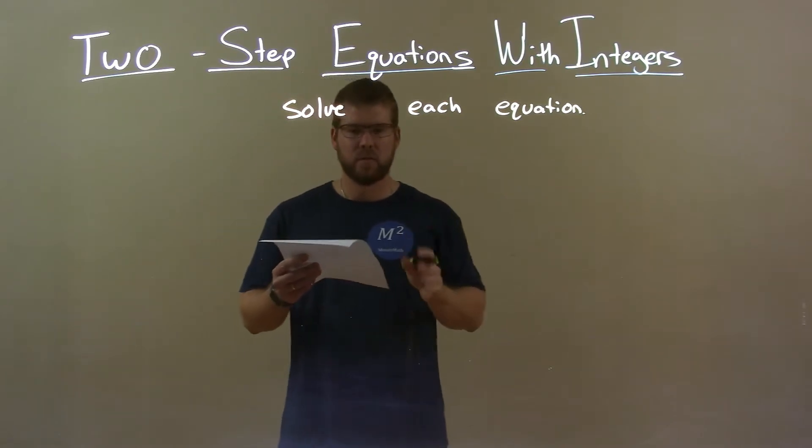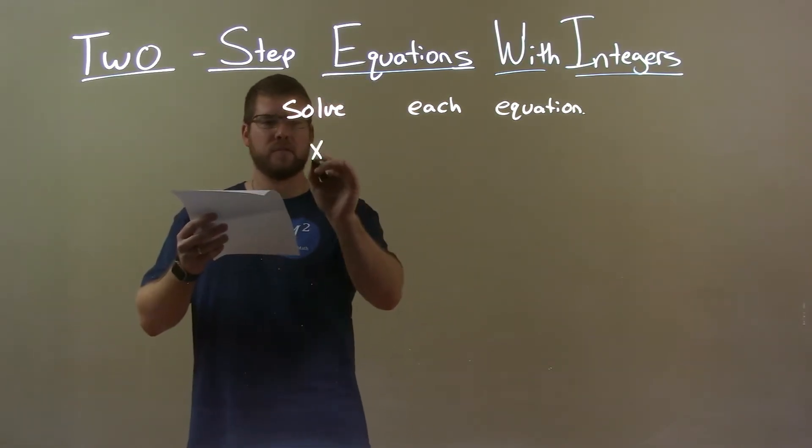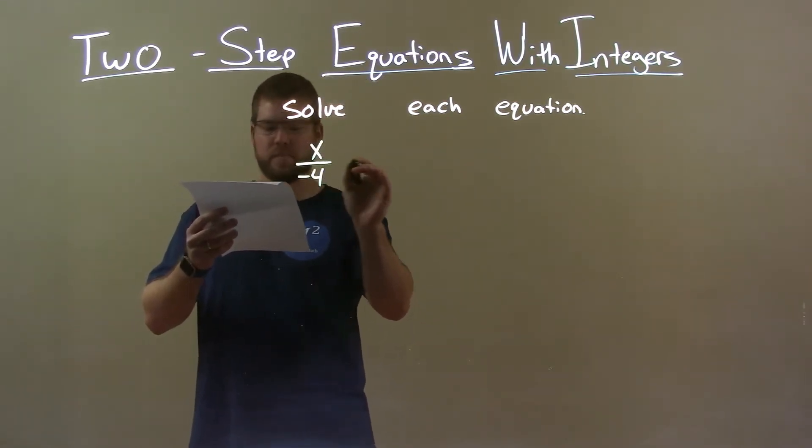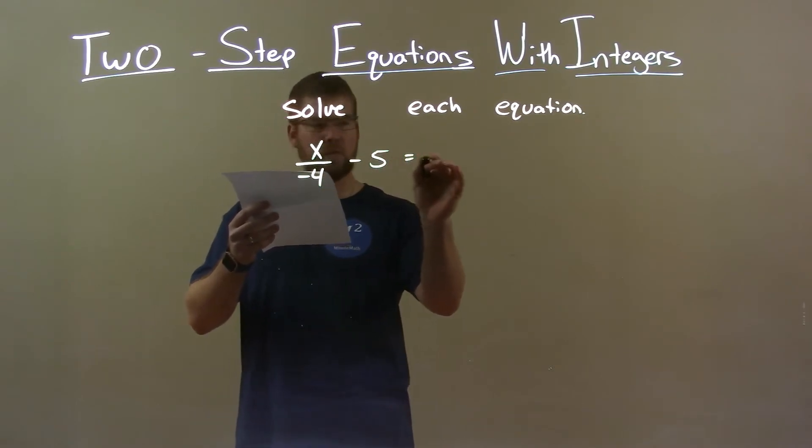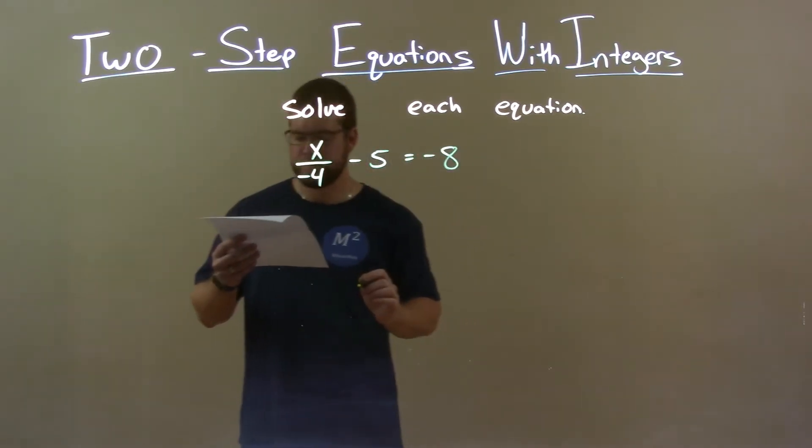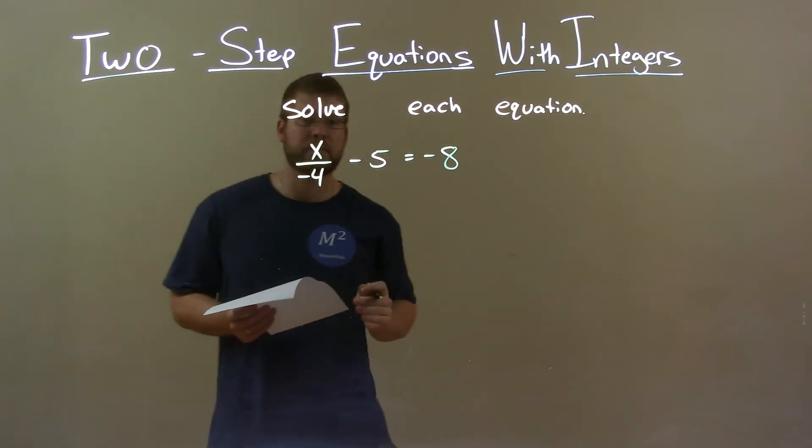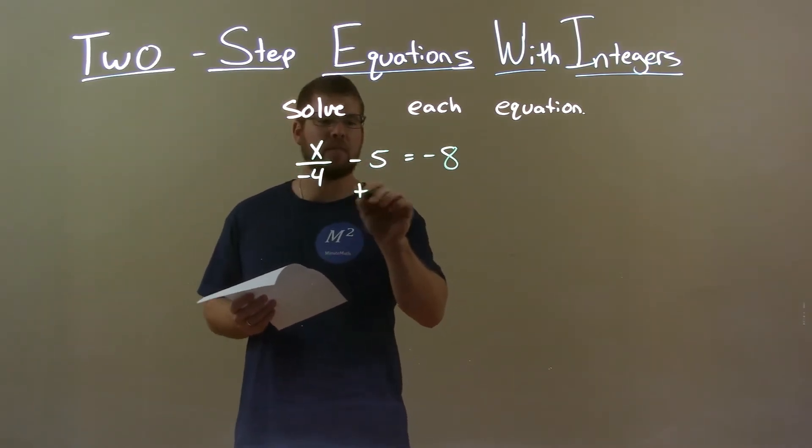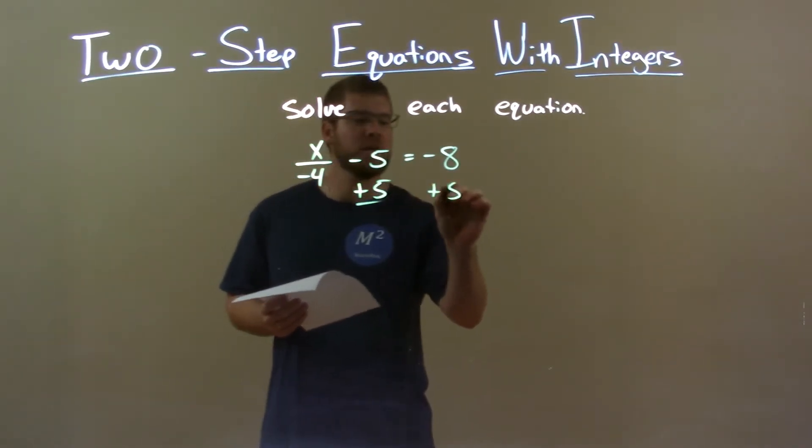If I was given this equation, x over negative 4 minus 5 equals negative 8. While I'm subtracting a 5 here, opposite of subtraction is addition. So my first step is adding 5 to both sides.